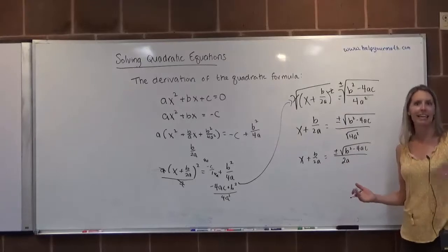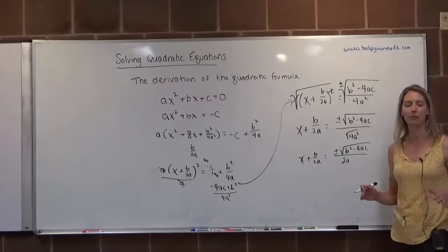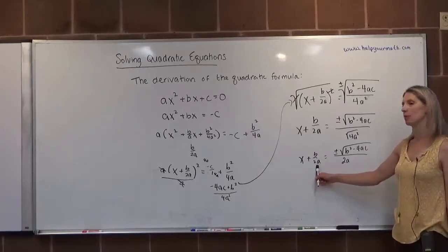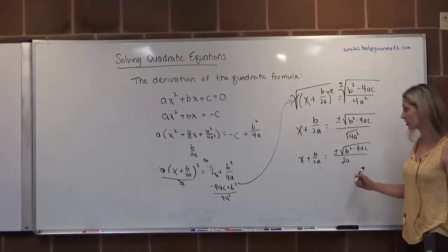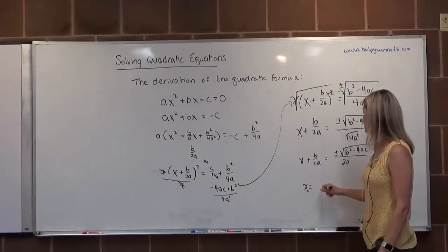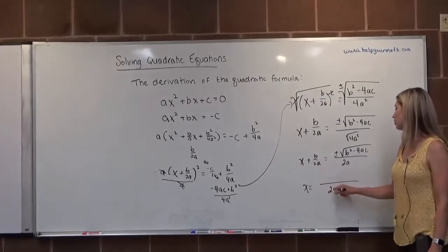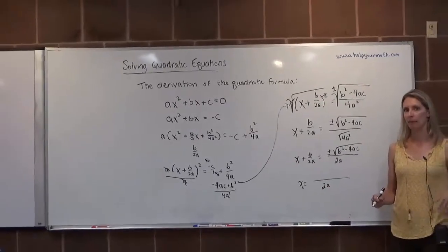One more step. We need to get x by itself. It's being added by b over 2a. There's great news here. I have a fraction with a denominator of 2a, and here I have a fraction with a denominator of 2a. So that's good because they already have the same denominator, so when I bring it to the other side, we can just combine the numerators since they both have that denominator of 2a.